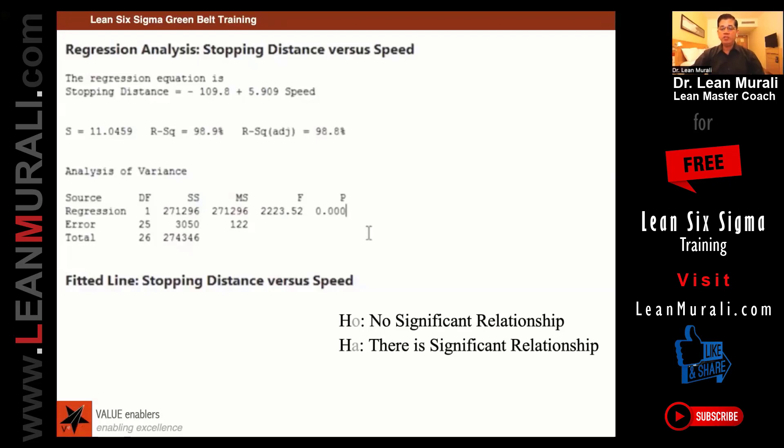That is, there is a significant relationship. So the same rhymes because like LKG people, we will do this rhyme. If P value is low, null must go. P value is high, null is the guy, right?